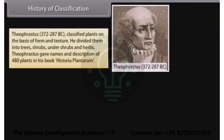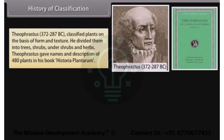Theophrastus (372–287 BC) classified plants on the basis of form and texture. He divided them into trees, shrubs, undershrubs, and herbs. Theophrastus gave names and descriptions of 480 plants in his book Historia Plantarum.